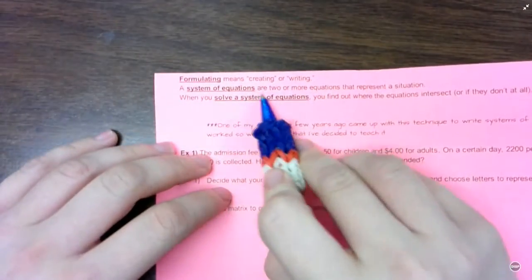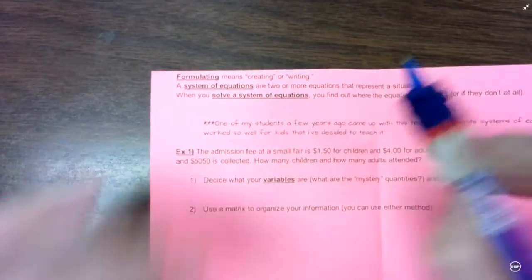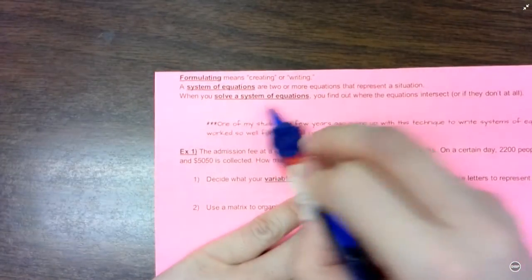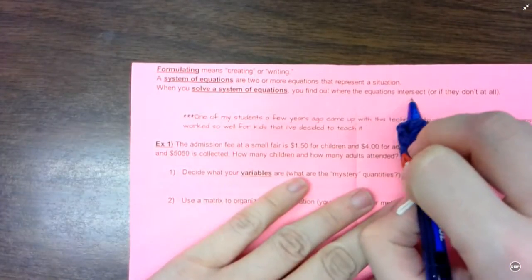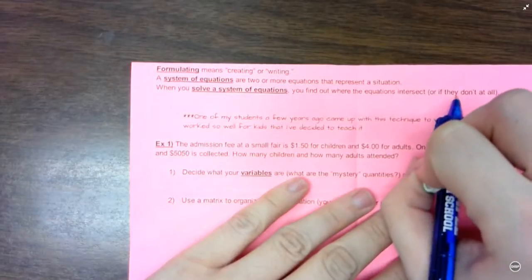A system of equations, remember, are two or more equations that represent a situation. And when you solve a system of equations, you're basically finding out where the equations intersect or if they don't intersect at all.